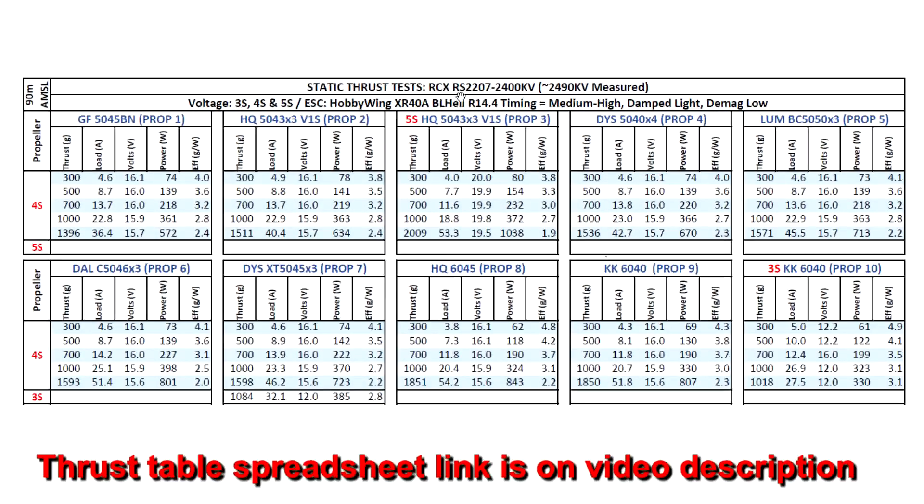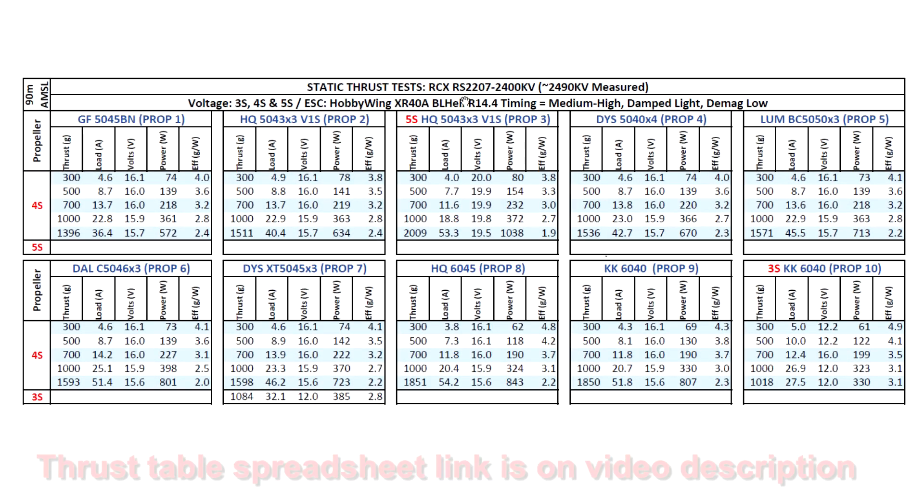And here are the thrust test results for the new motor from RCX, RS2207 2400 kV. This one came in at 2,490 kV, so pretty good kV value I think, close to 2,500, much better than if it was 2,400 I think. A little bit higher is better for this size motor and 5-inch props.